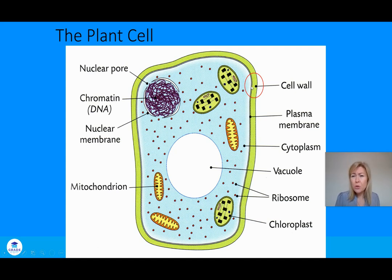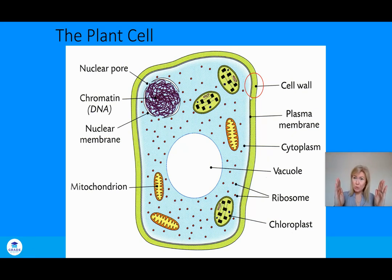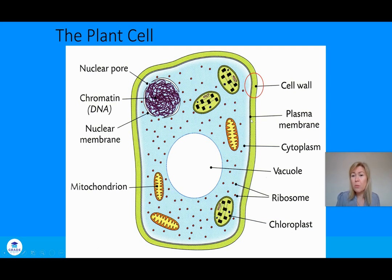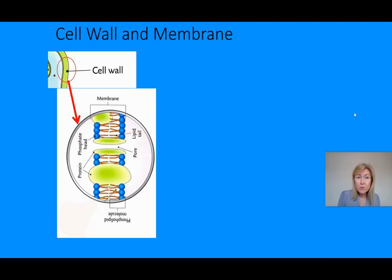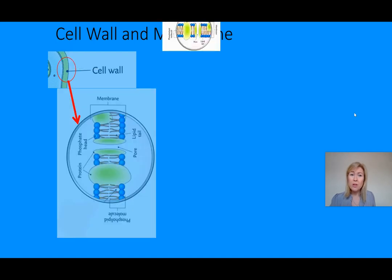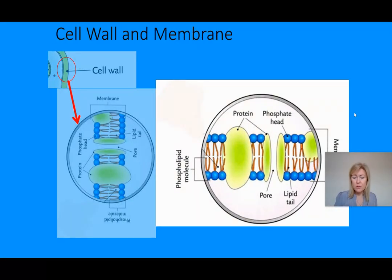If you look closely, attached to the inner lining of the cell wall is the cell membrane — it's stuck to the inside of the cell wall. When drawing it, you don't even have to outline it separately; just label that part as the cell membrane, or plasma membrane. I've zoomed in on that cell wall part using an electron microscope so you can see the structure of the cell membrane.